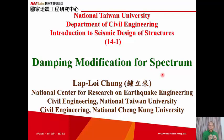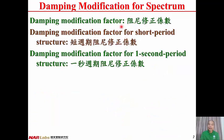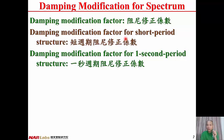In this lecture, we will talk about the damping modification for spectrum if the damping ratio is different from 5%. If the damping ratio is different from 5%, we have to use a damping modification factor to modify the design spectrum. There are two damping modification factors: one is the damping modification factor for short period structures, and the other is the damping modification factor for one-second period structures.